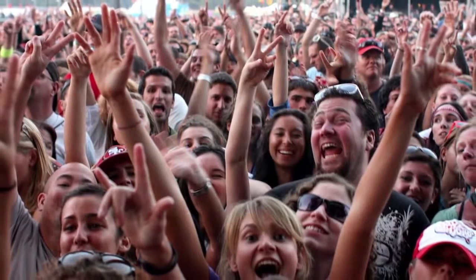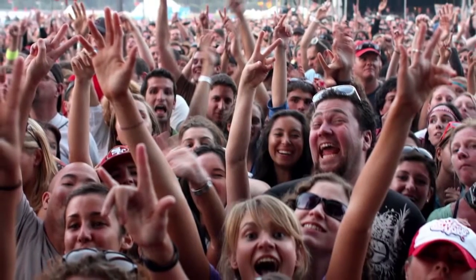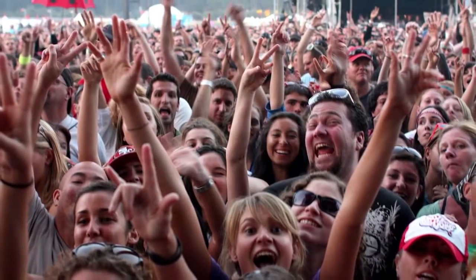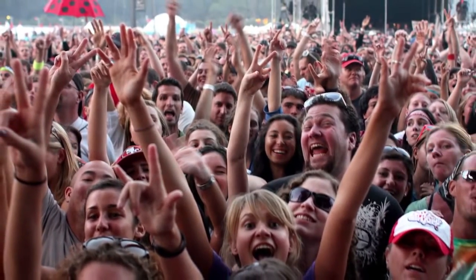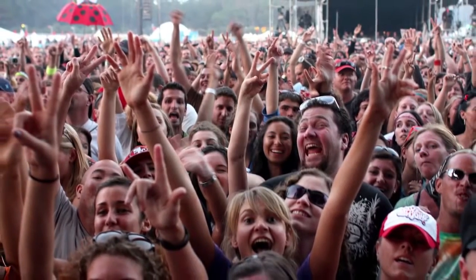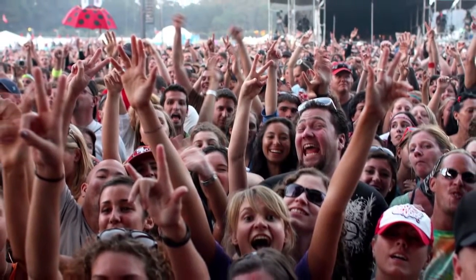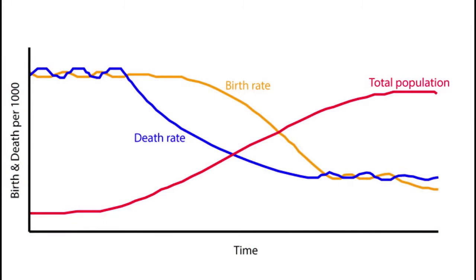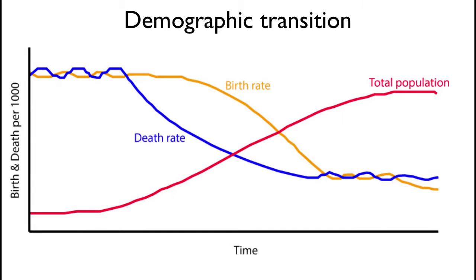Up till the present day, it seems that history proved Ehrlich and other doomsayers wrong, since the mass starvations predicted for the latter quarter of the 20th century never occurred. The reasons for this are multiple, but one important factor that Malthus could not have foreseen was the demographic transition.